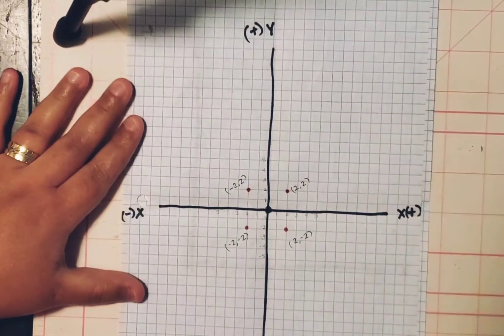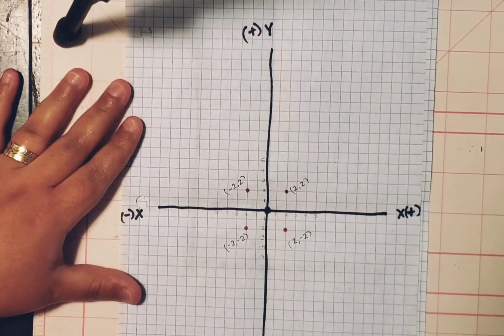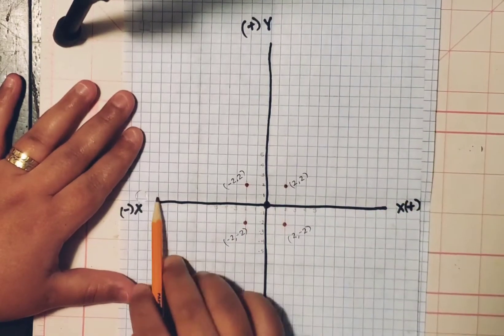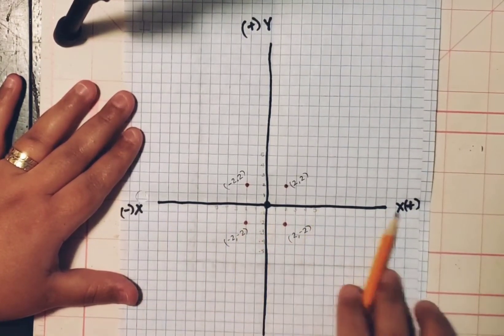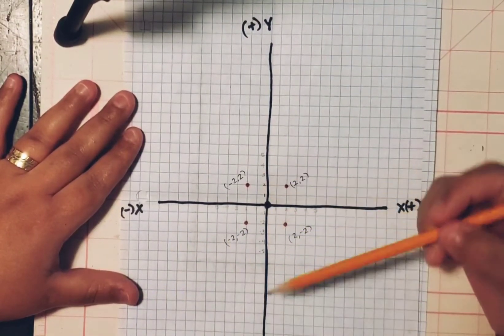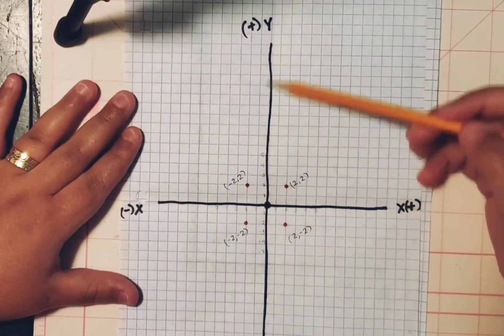To start off with this one, when you start plotting points on a graph, you always start with your X line side to side, and then you continue with your Y up and down.